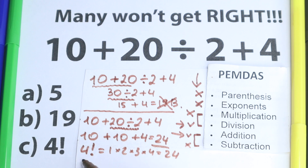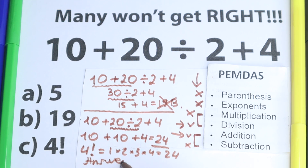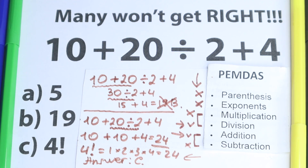So the correct answer according to this test is option C. According to the calculation, the answer is 24. I hope you understand this explanation and enjoyed this video. See you in the next videos — I wish you all the best in your math adventures, thank you for your time and have a great day!